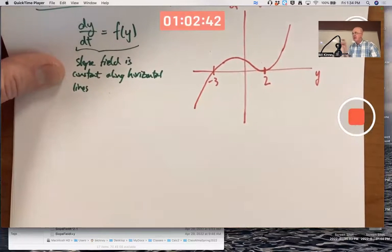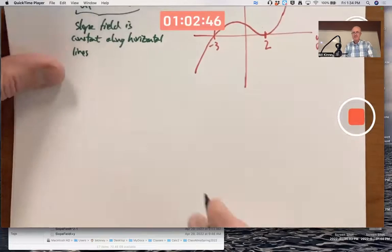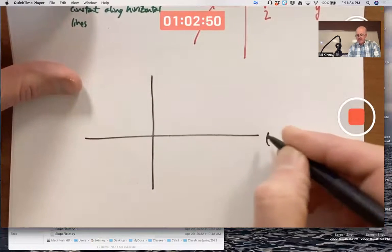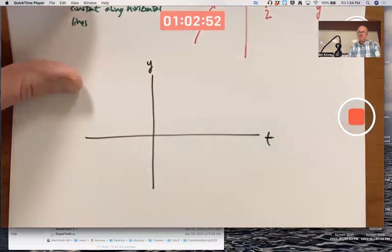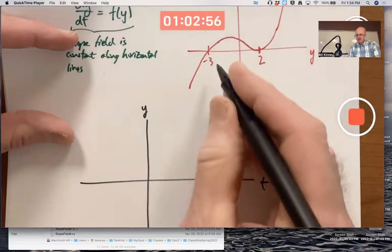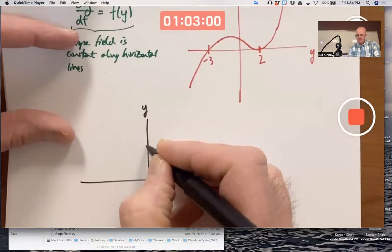That's where you're going to have equilibrium solutions at those values of y. In another plane, a ty plane, you're going to have equilibrium solutions when y is negative 3 down here or positive 2 up here.